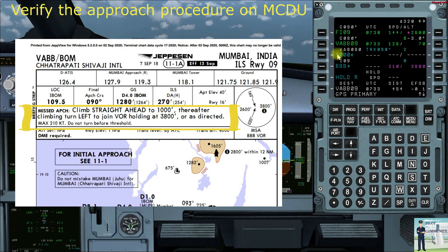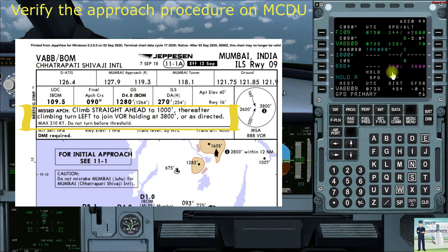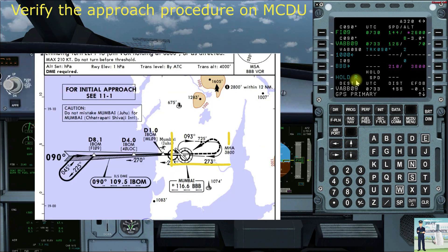We can also verify our missed approach procedure, which shows that on a track of 090 — that is runway heading — we climb to 1000 feet, thereafter a climbing left turn to join BRAB at 3800 feet and 210 knots. It is also showing a right-hand holding pattern, as cross-checked from the plan view in the chart.